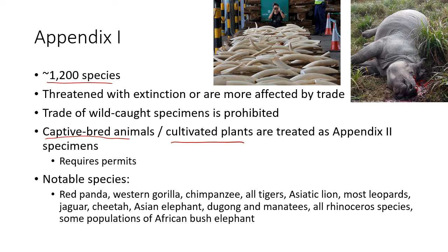Notable Appendix One species include the red panda, Western gorilla, chimpanzee, all tiger species, the Asiatic lion — yes, there are lions in Asia — most leopard species, the jaguar, the cheetah, the African forest elephant, dugong and manatees, all rhinoceros species, and some populations of the African bush elephant. When you think of an endangered species that has something of market value — trophy hunting, horns, tusks — it's probably on Appendix One.